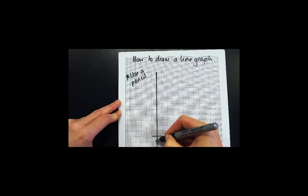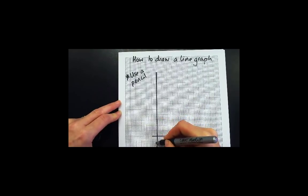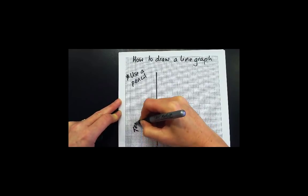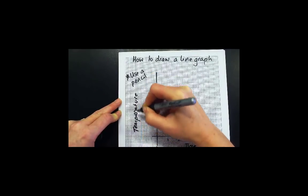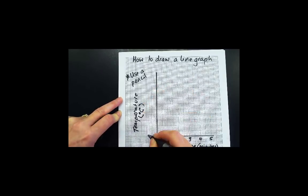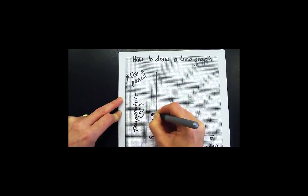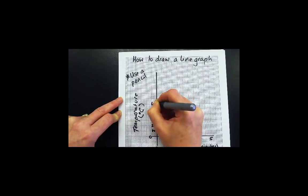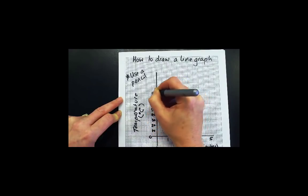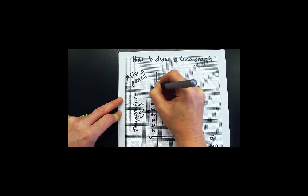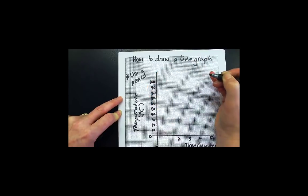The y-axis, the vertical axis, will contain the dependent variable and that's the variable you measured during the experiment. Again, remember that your scale must be evenly spread along the whole length of the axis.